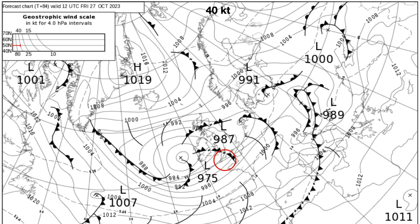There are a couple of adjustments to make before we find the wind we can expect off Portland Bill. The first is surface friction. The Geostrophic Wind scale is based on 600 meters above the surface rather than at the surface, because the surface of the earth varies greatly from place to place — a smooth ice cap at one extreme or a city with tightly packed skyscrapers at the other have massively differing friction. So to avoid these complications, the scale uses a height at which the friction effect is negligible: 600 meters or 2,000 feet above the surface.